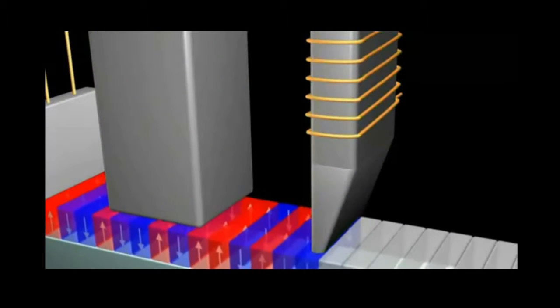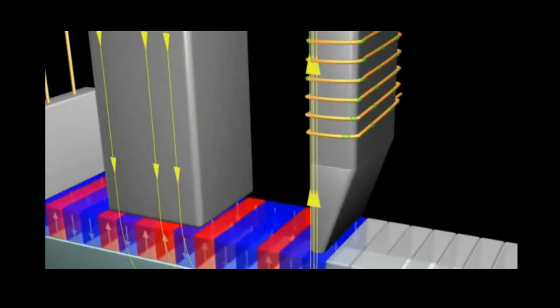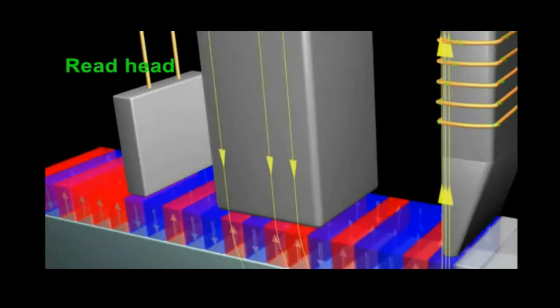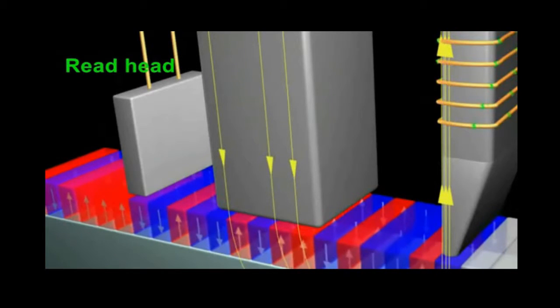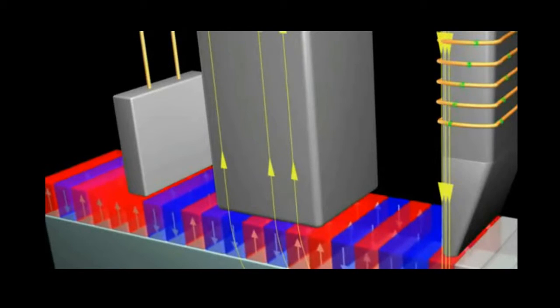As you may remember from earlier sections, reversing the direction of current in an electromagnet results in reversing the direction of the magnetic field. Once written, the bits can be read by the read head which senses the direction of the magnetic field as it goes over a written bit.